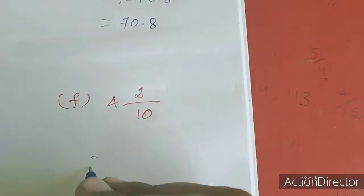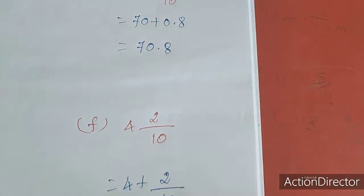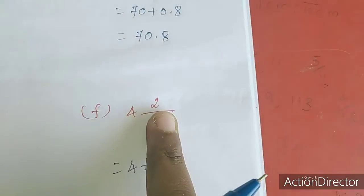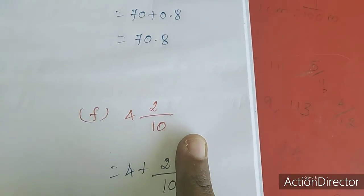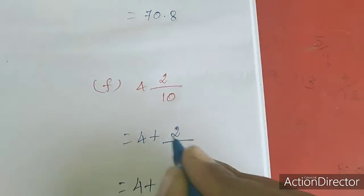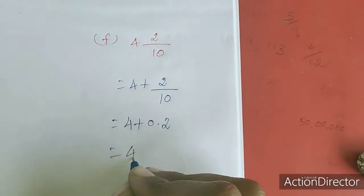This is the whole number 4 plus 9, 2 by 10. This is the decimal. So 4 plus 4 digit is the decimal. So 4 plus 0.2 is 4.2.